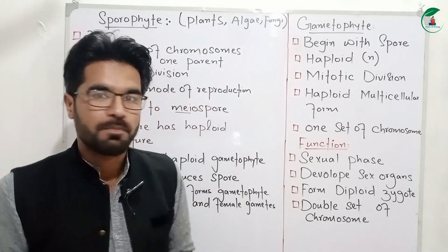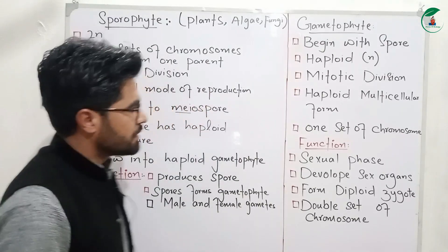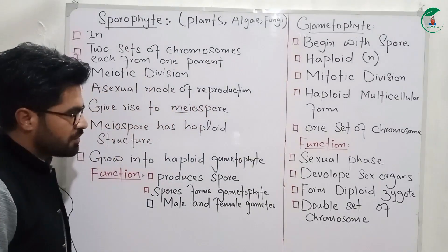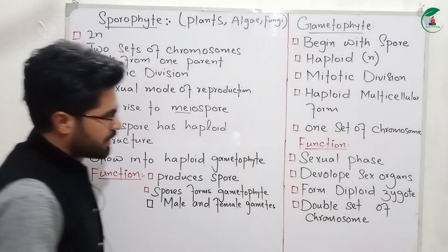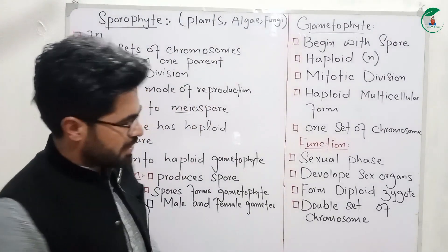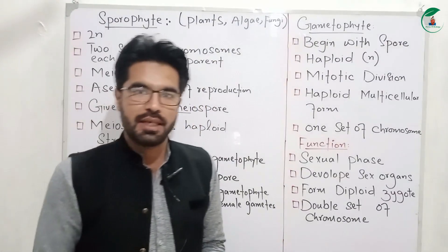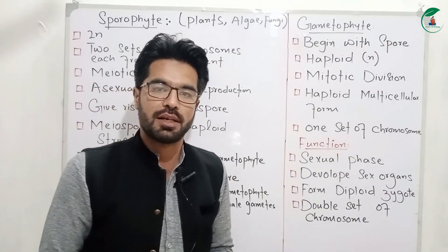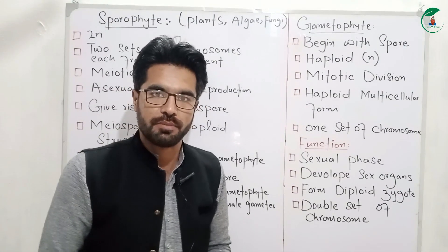Assalamualaikum warahmatullahi wabarakatuh. This is the class first year of biology, chapter number 8, diversity among plants. This is the topic of evolution and alternation of generation.